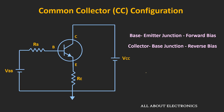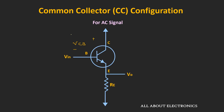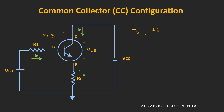Looking at the direction of the currents in the circuit, the base current is the current on the input side, while the emitter current is the current on the output side. The DC voltage on the input side is equal to Vcb, and the DC voltage on the output side is equal to Vce. So Ib and Vcb are the current and voltage on the input side, while Ie and Vce are the parameters of the output side.